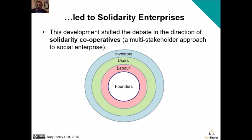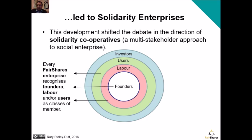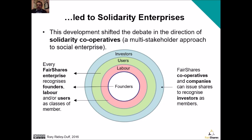This has led to the idea of a solidarity co-op. In the UK, the Fair Shares Association and others like Somerset Cooperative Services have embraced the new principles in cooperative law to create solidarity enterprises — a multi-stakeholder approach to social enterprise. Every fair shares enterprise recognizes founders, labour, and/or users as classes of member, and if you constitute as a cooperative or a company you can also issue these groups with shares to recognize them as investors as well.